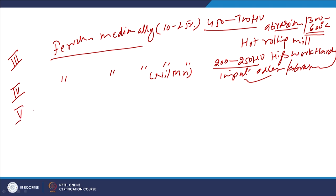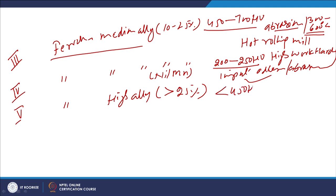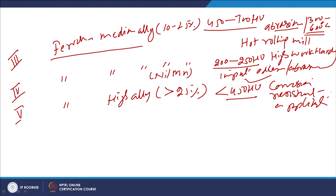Category 5 materials are iron-base high alloy materials with alloying concentration greater than 25%. They will have hardness less than 450 HV and are used for corrosion-resistant applications and for buttering purposes.